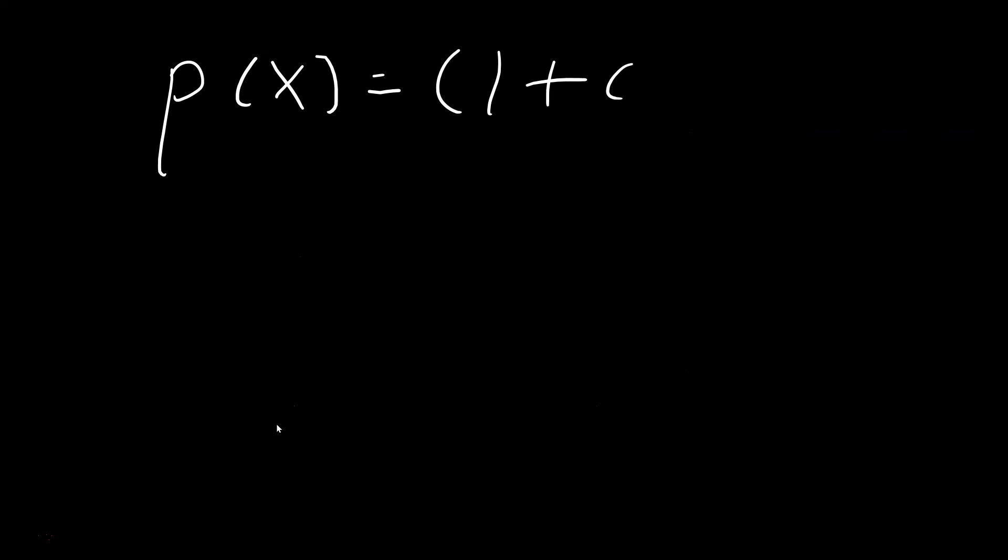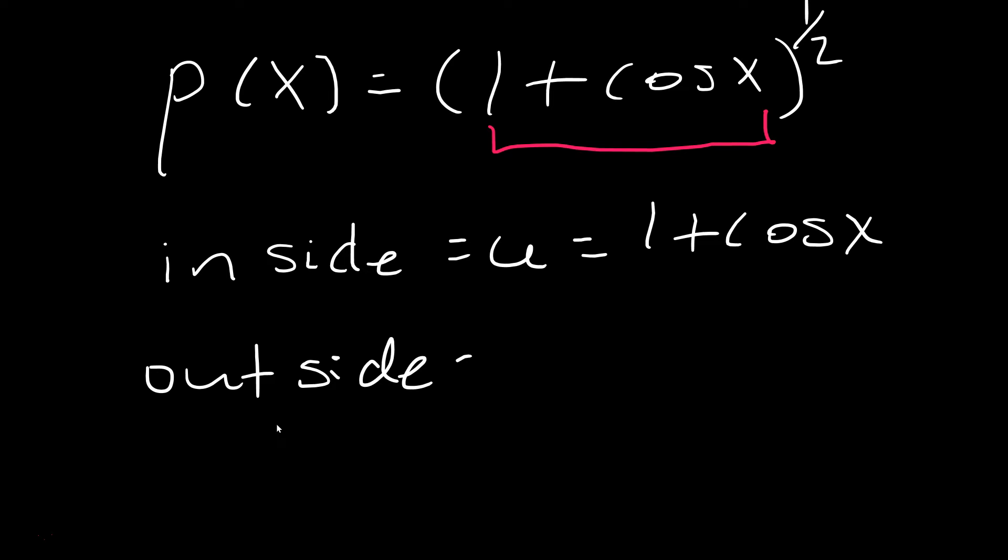p of x is equal to 1 plus cosine x raised to the 1/2. So the inside then is the 1 plus cosine x. Again, you can call it the inside, you can call it u. And then the outside just becomes, you should really pause the video and think about this, that just becomes p of u, and then u raised to the 1/2.